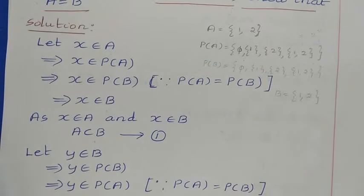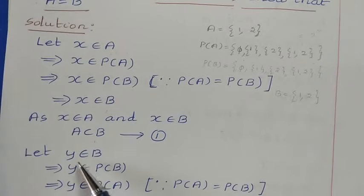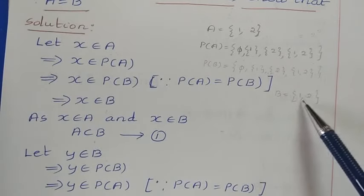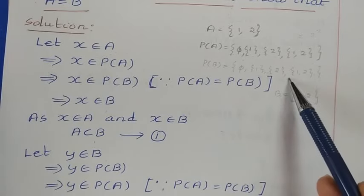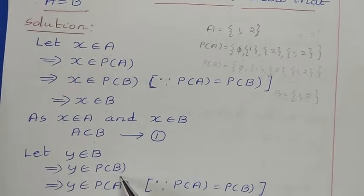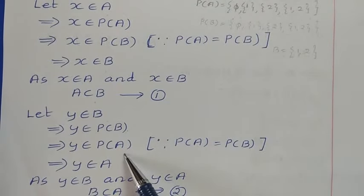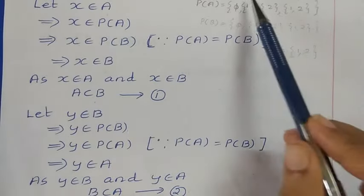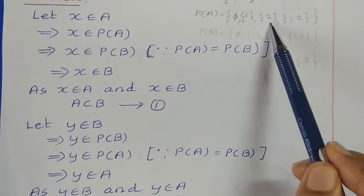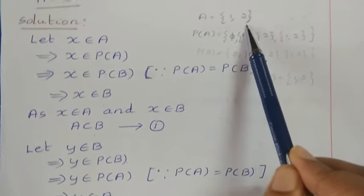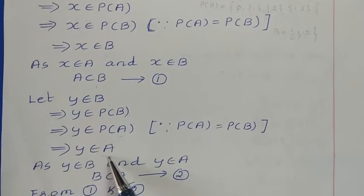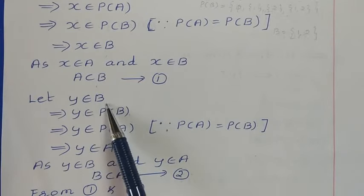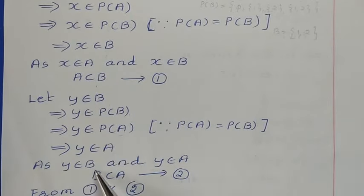Next, take another element Y and assume Y belongs to B. For example, if Y is 2, then 2 belongs to B means 2 is also in P of B. So Y belongs to P of B. Since P of A equals P of B, we can write Y belongs to P of A. Y belongs to P of A implies Y belongs to A. So Y belongs to B and Y belongs to A, meaning B is a subset of A.